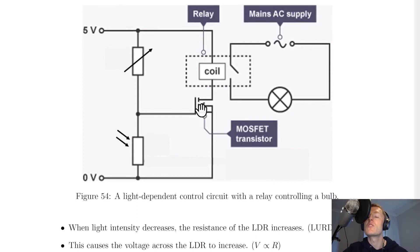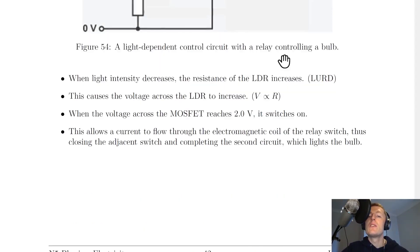So when this MOSFET switches on, this allows current to flow through the coil of the relay switch, which closes the switch to the second circuit and switches on the bulb.